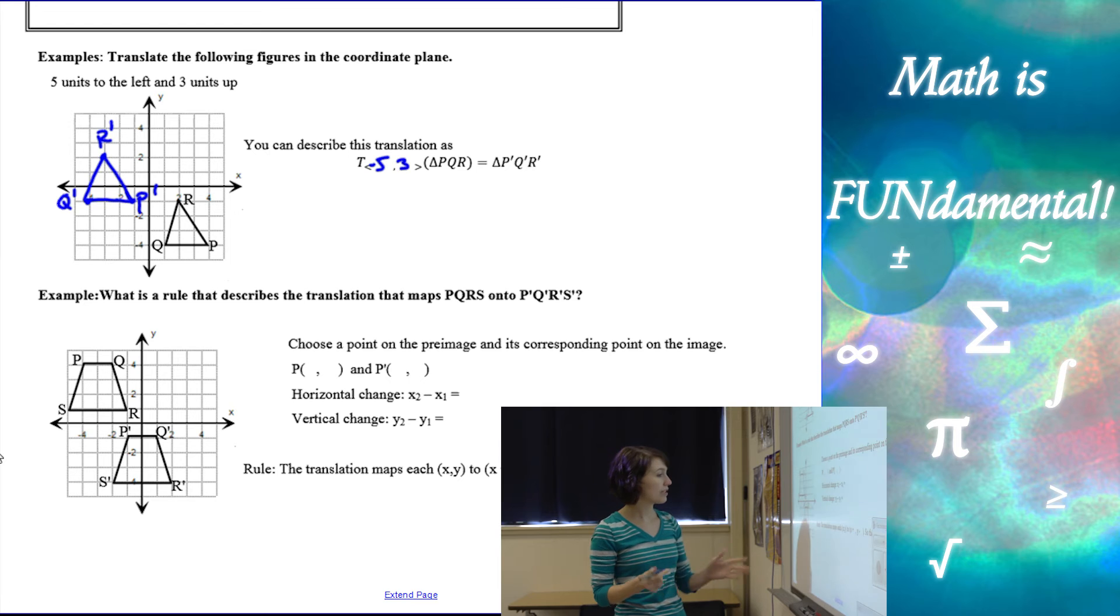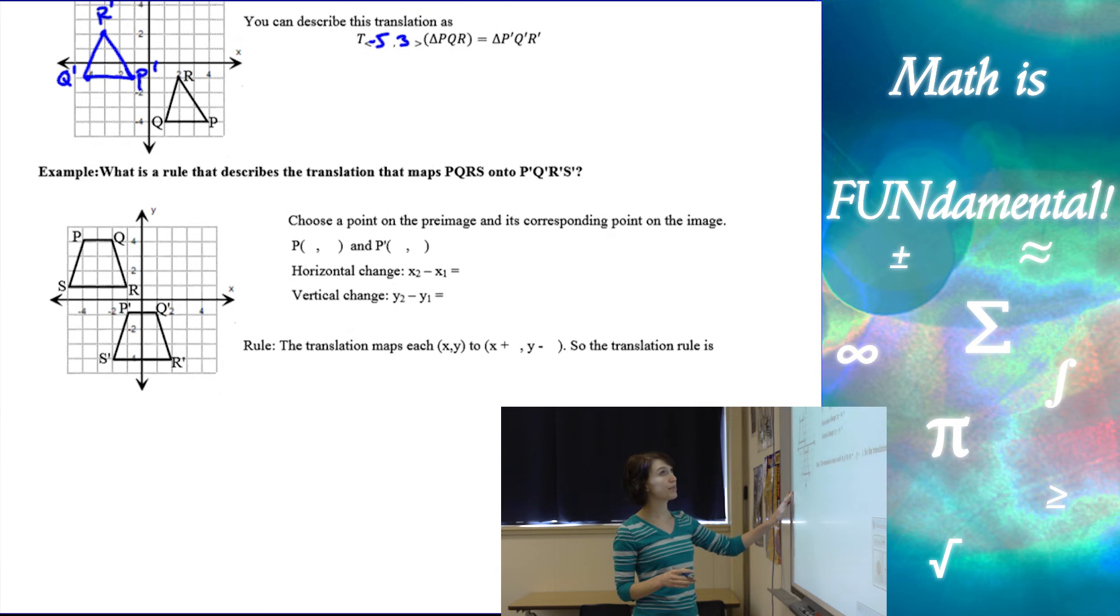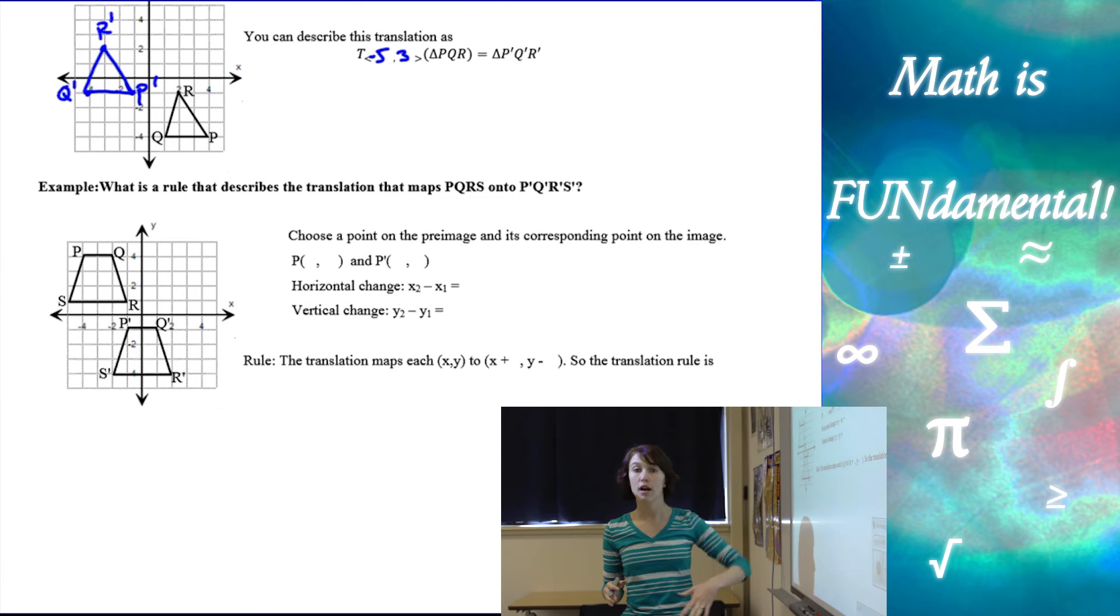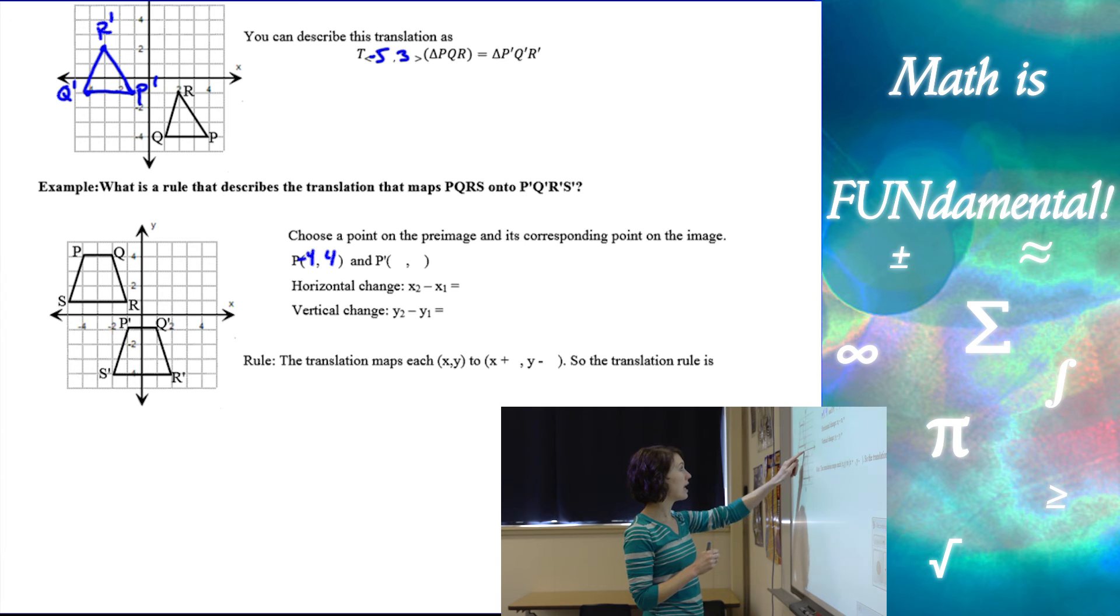Next example, last one here. What is a rule that describes the translation that maps PQRS to P prime Q prime R prime S prime. So first what we're going to do is we're going to just choose one point and its corresponding image point. So P in this case is at negative 4, positive 4. And P prime is at negative 1, negative 1.